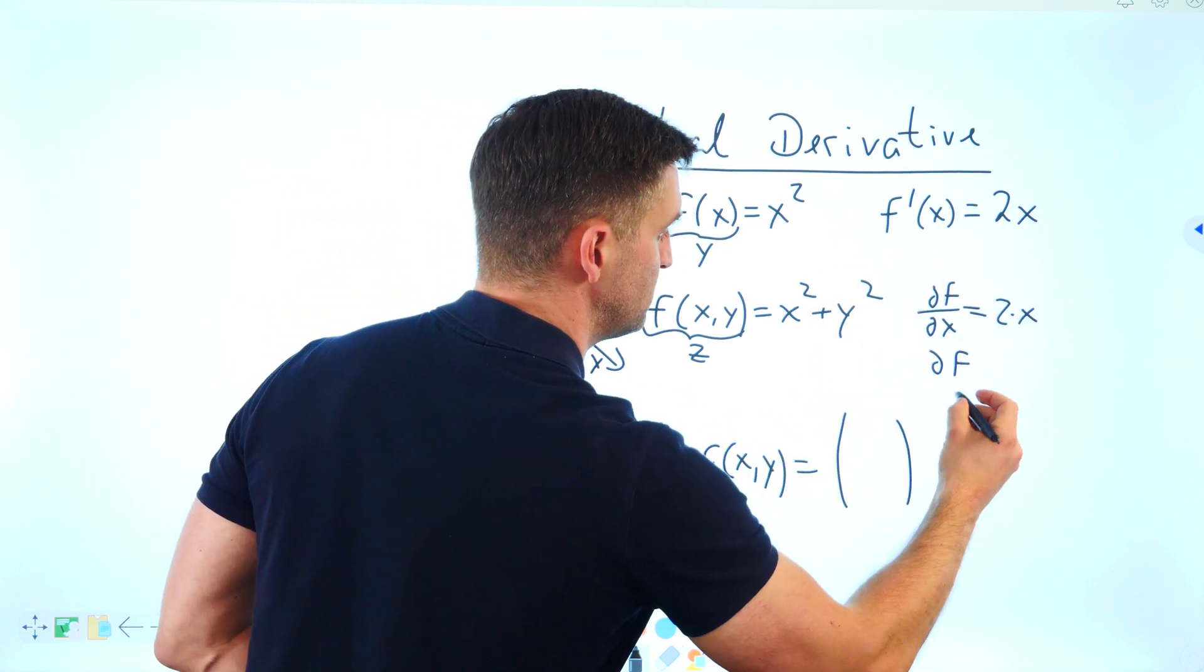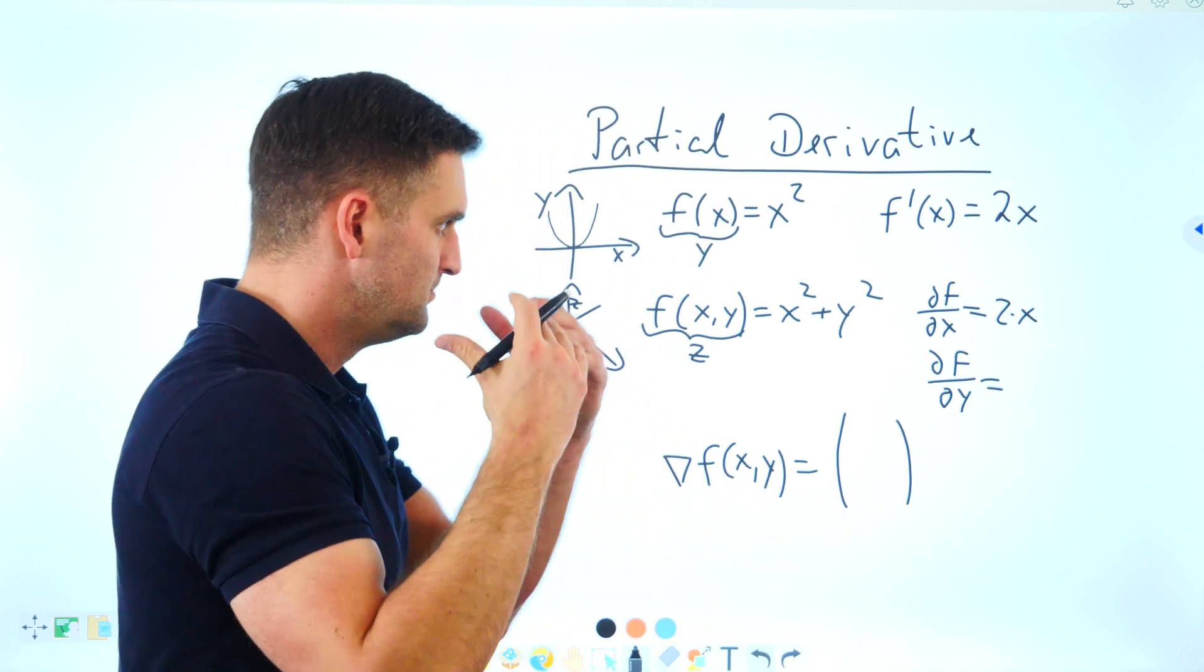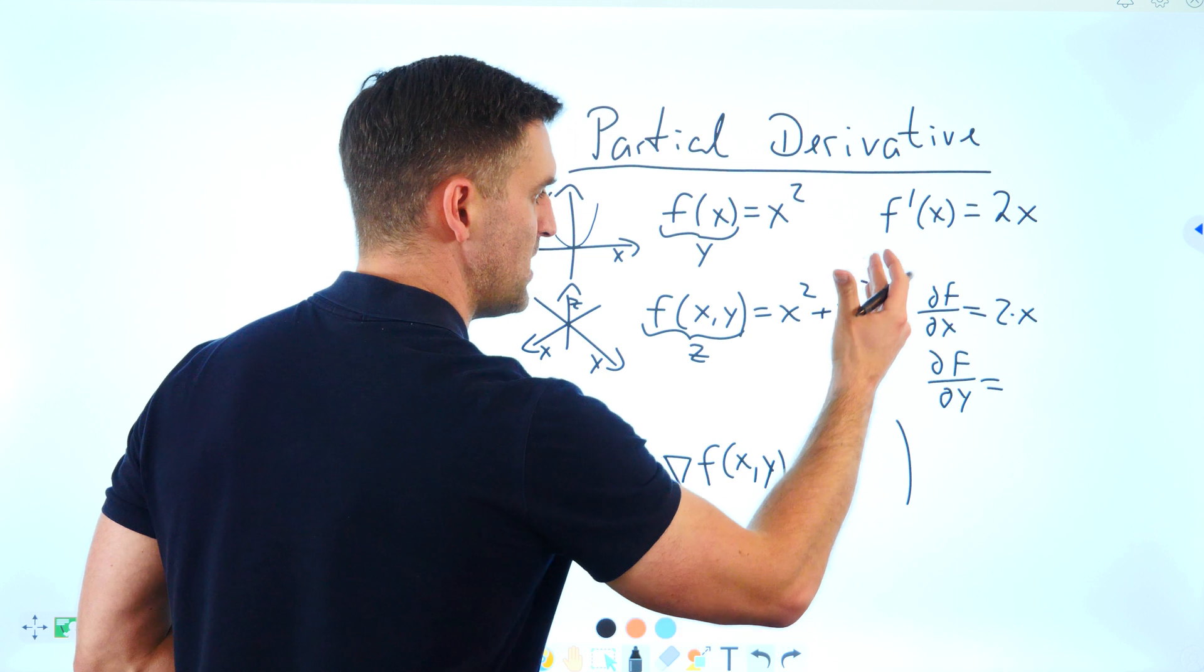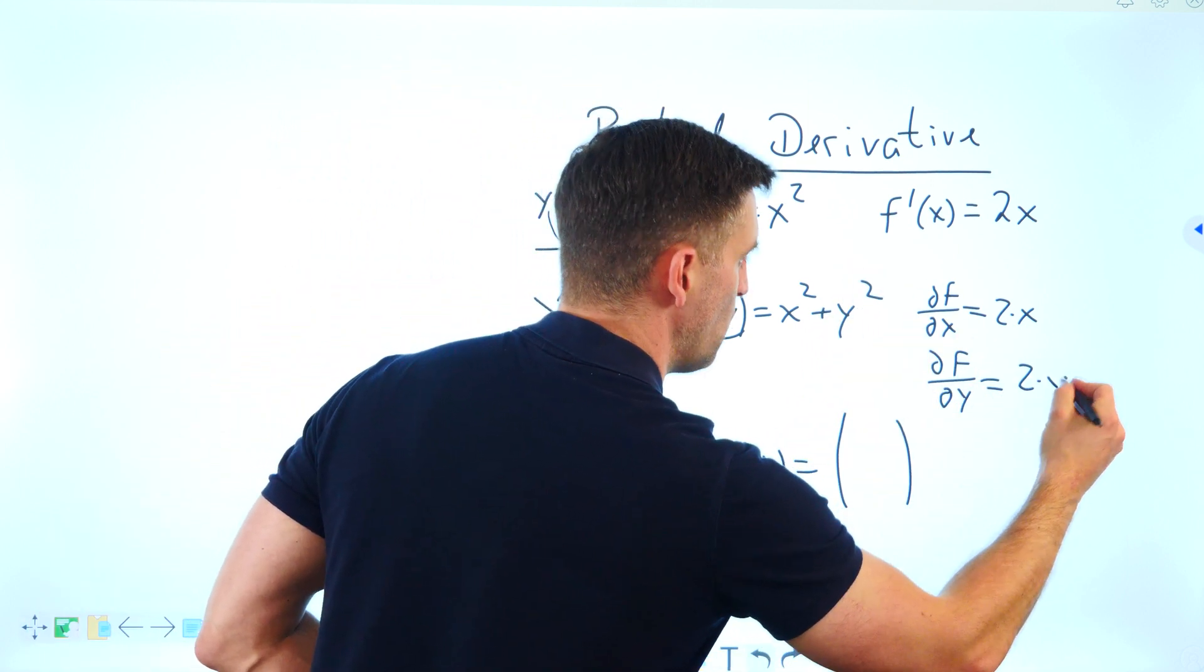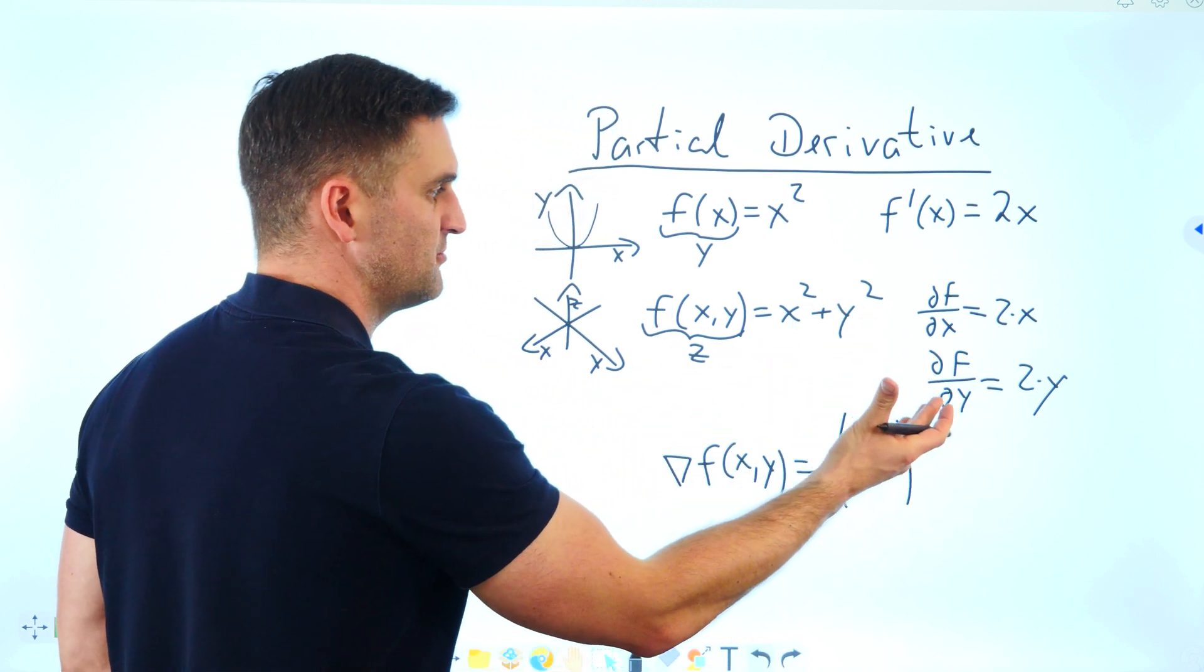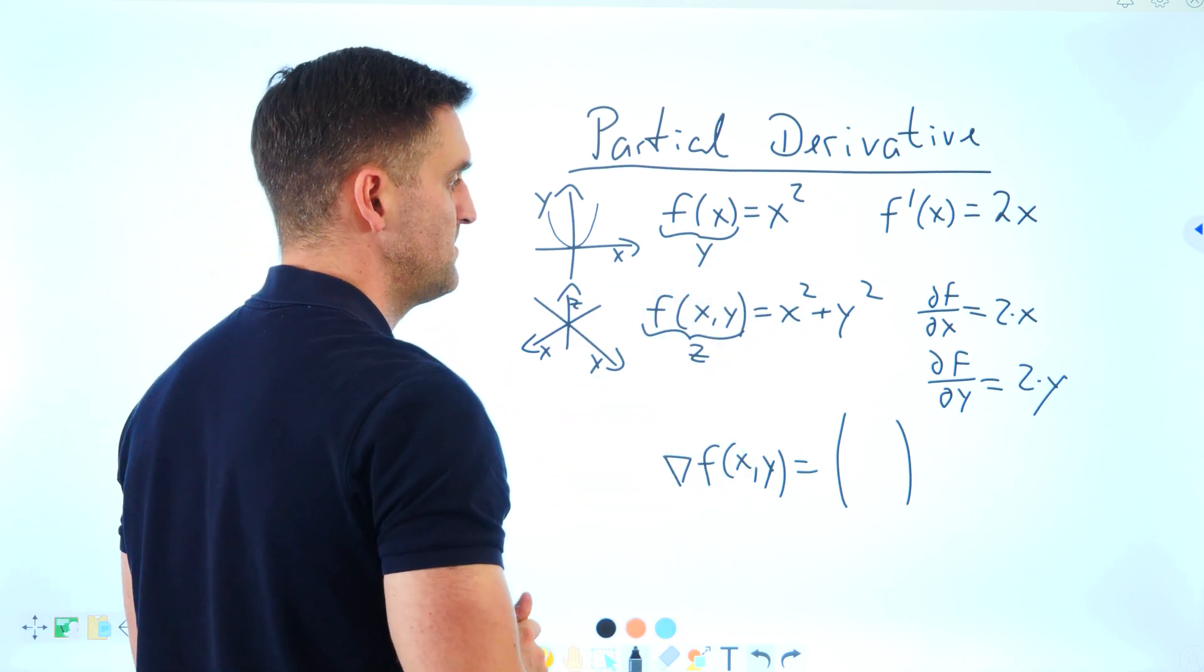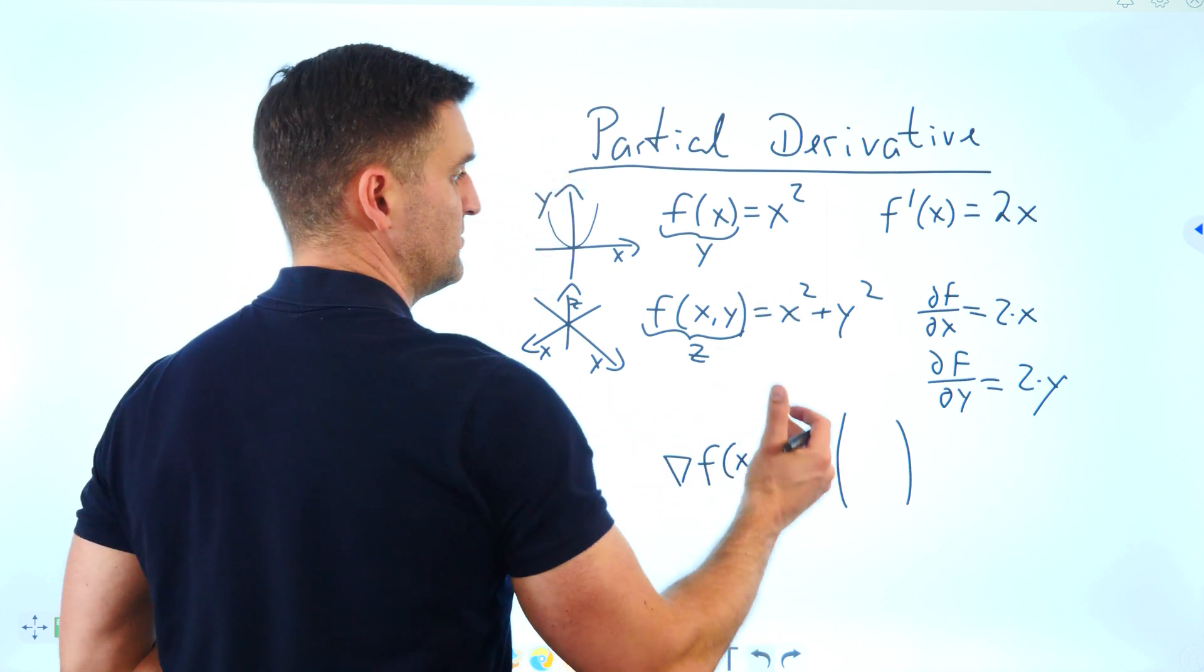And the partial derivative with respect to y. Now you have to look at y to the power 2 and the derivative would be 2y. In this case, because it's the partial derivative with respect to y, think of x as a number. A number to the power 2 would be a number again, and this derivative would be 0.